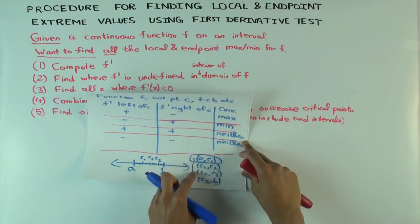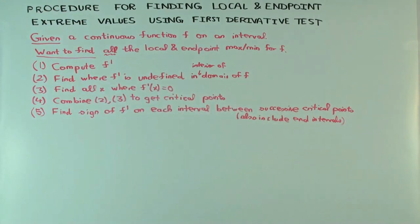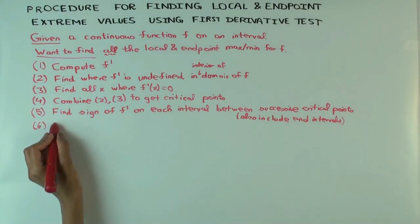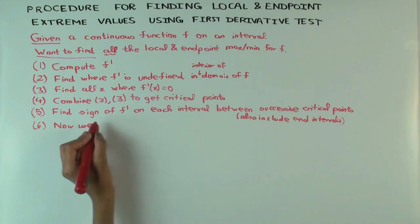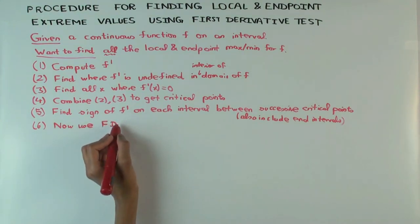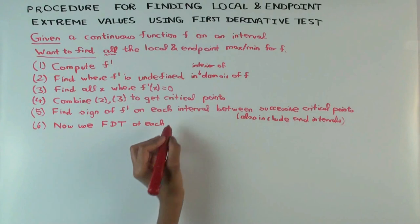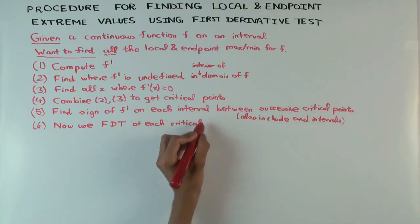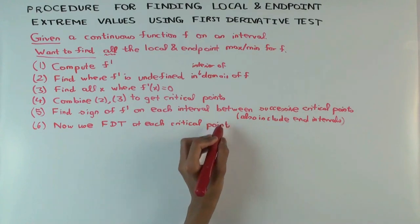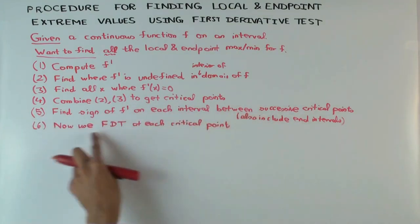Once you figure out the sign of the derivative in each of the intervals, you can then use the first derivative test at each of the critical points. Also use the one-sided first derivative test at the endpoints. That sign information from F prime is what you need to apply the first derivative test and the one-sided first derivative test at endpoints, if there are any.